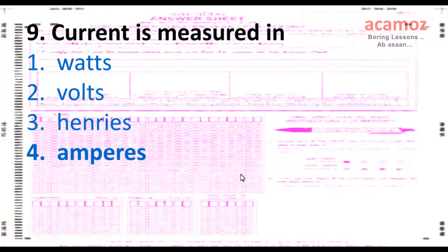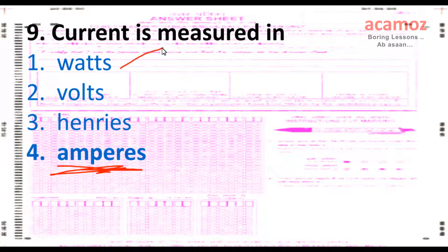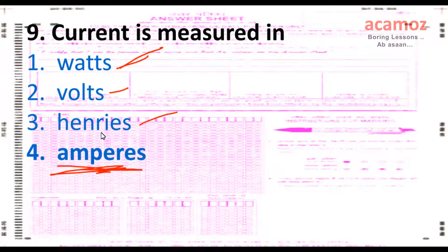The unit of current is the ampere. The unit of power is the watt. The unit of inductance is the henry. So the unit of current is ampere.